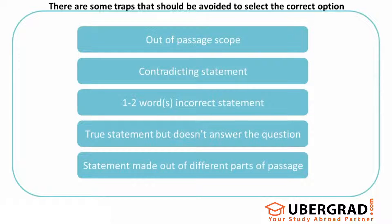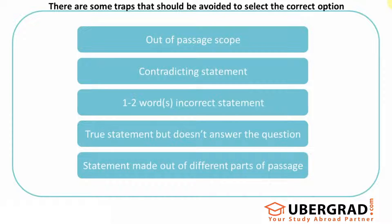The most dangerous one is the 'one-to-two words incorrect statement.' If you've done a lot of RCs, you would face this problem especially in inference questions — 'which of the following statements would the author agree to' or 'can be inferred.' You'll find two options after eliminating others that look extremely similar, exactly the same except for one or two words. That's the thing to look for: when you've eliminated options and are confused between a couple, match them word by word and see the difference in those words and what they're trying to convey.